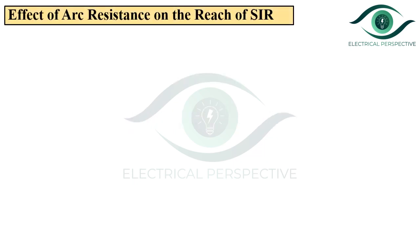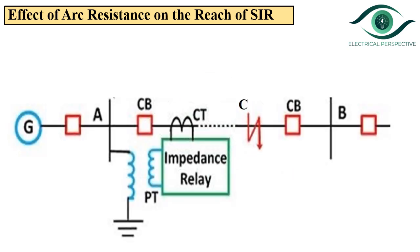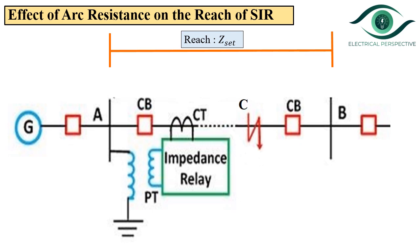Now let us discuss the effect of arc resistance on the reach of simple impedance relay. Consider the transmission line AB as shown in the figure. Assume there is a source only at end A and we wish to create a zone of protection extending from A to B. The impedance relay is located at end A. It requires two inputs: voltage from the PT (potential transformer) and current from the CT (current transformer). The reach of the relay is set equal to Z_set, which is the impedance of section AB under normal operating conditions.